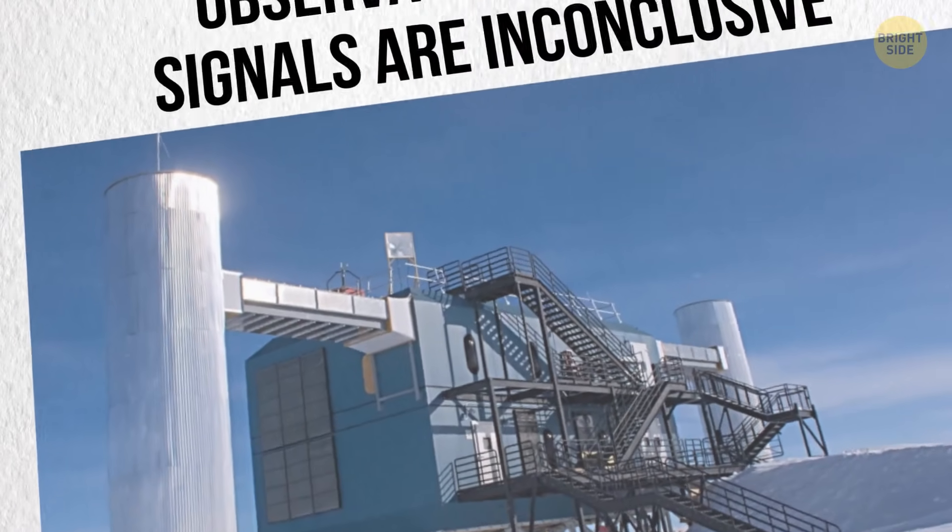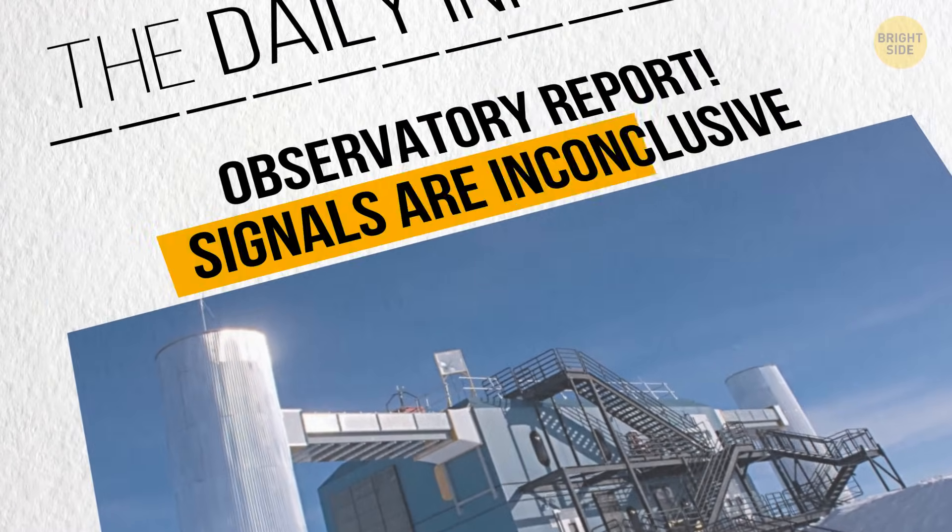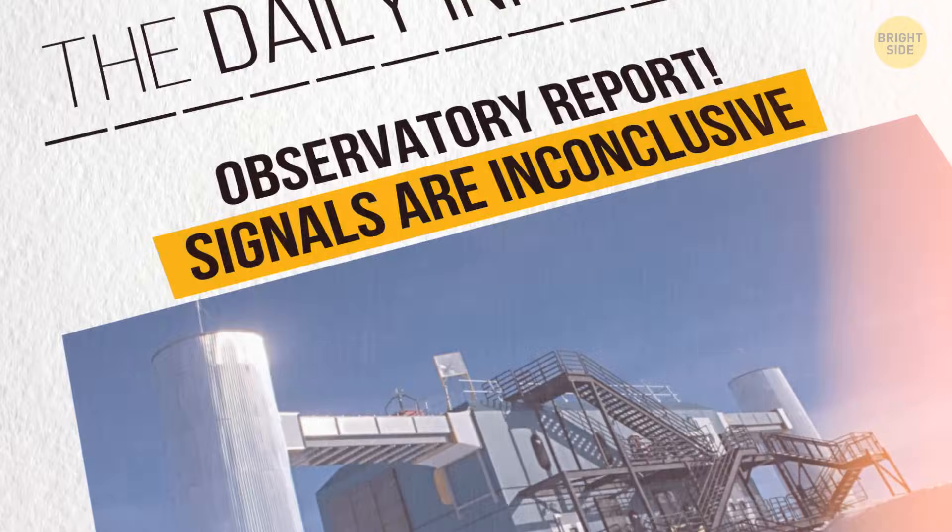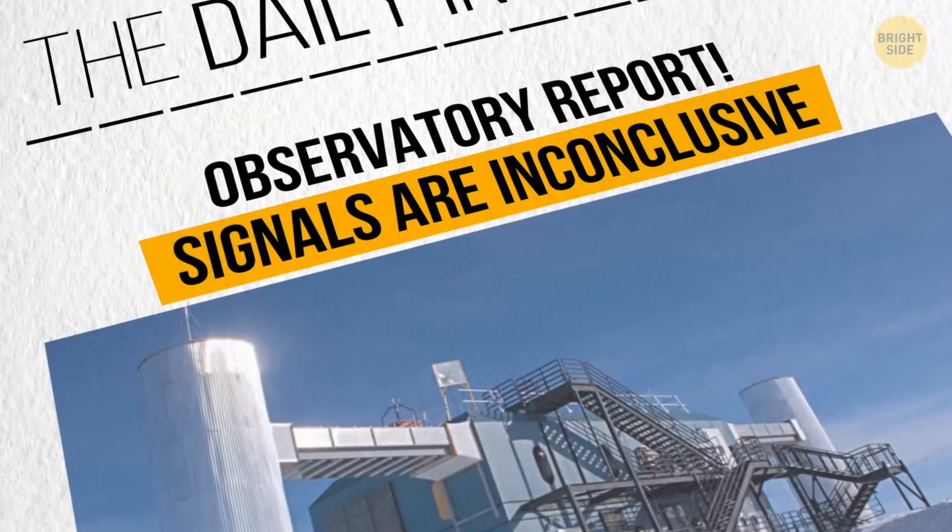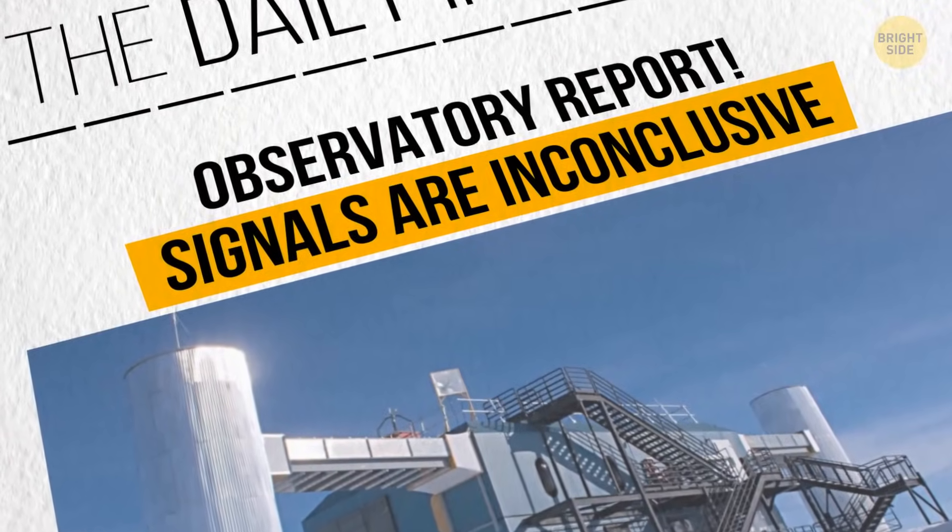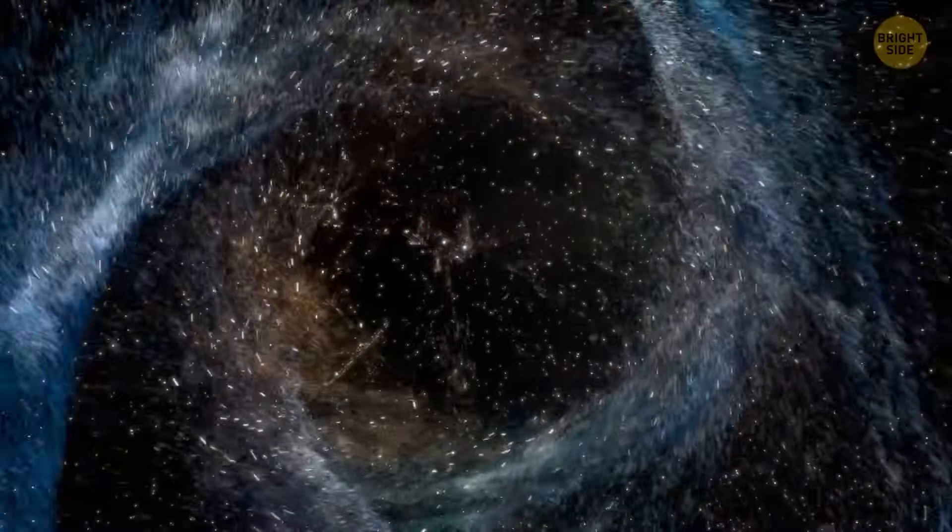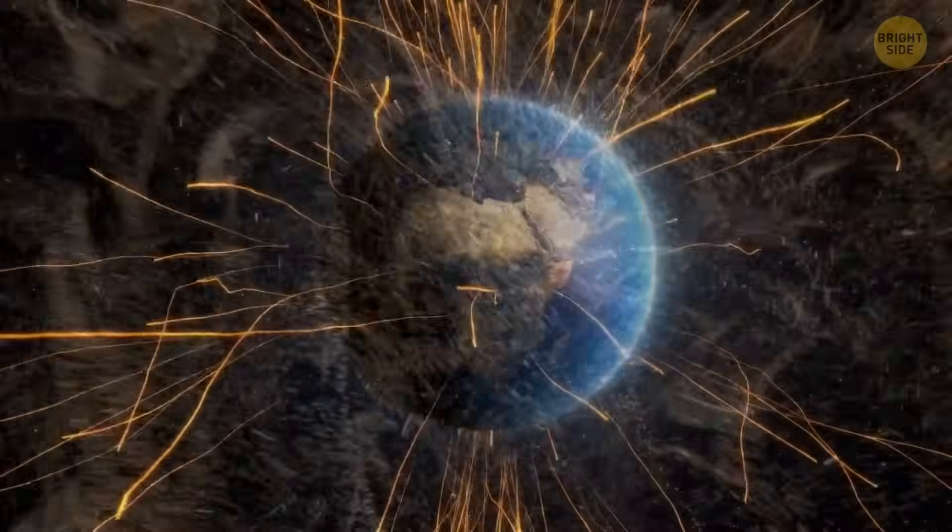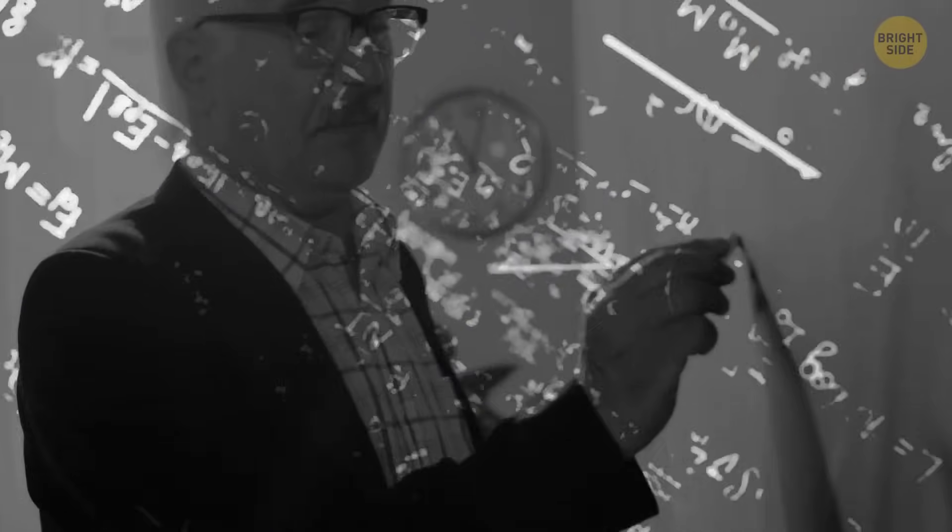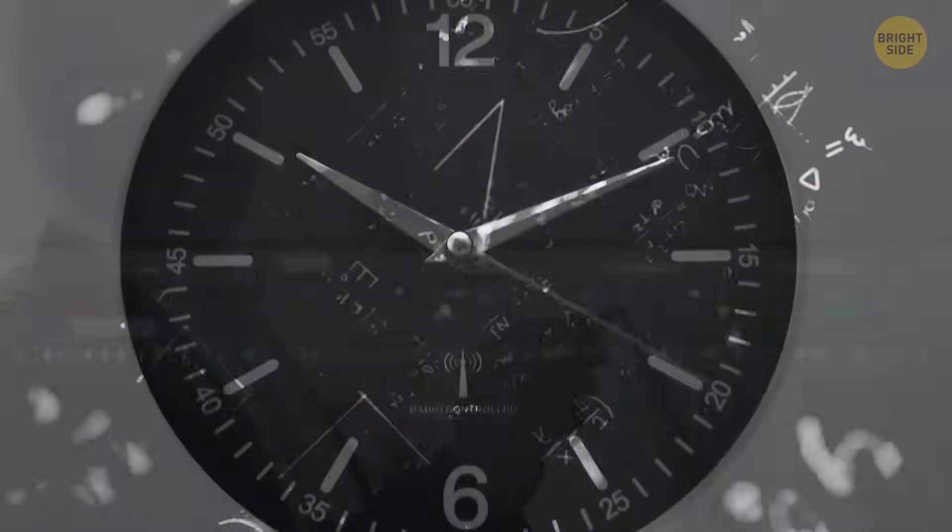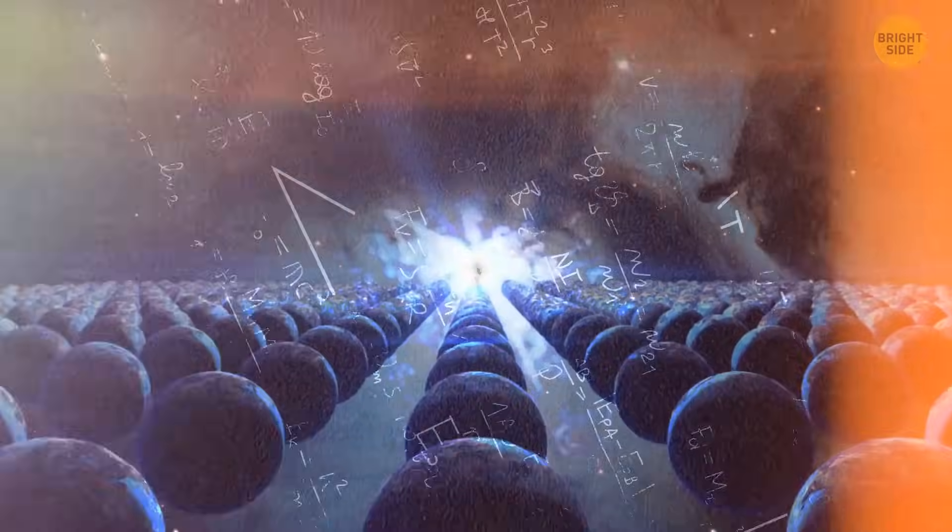Later, IceCube published an article which basically said, Nope, we have no idea where these signals came from and how to explain them in terms of the standard model of the universe. Oh, now it's getting interesting. So, what on Earth are these signals? Having exhausted normal explanations, scientists began to consider ideas that go beyond our understanding. One of them said that perhaps these particles had come to us from a parallel universe where time flows in the opposite direction.